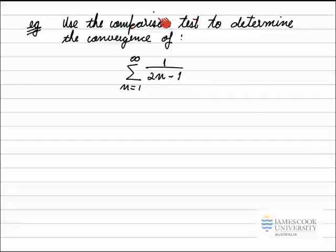We need to pick a series that is either smaller than this one that diverges so that the bigger series diverges, or we need a bigger series that converges so that the smaller one also converges. So it's a good idea to think about this series and come up with an idea if we think it converges or not.